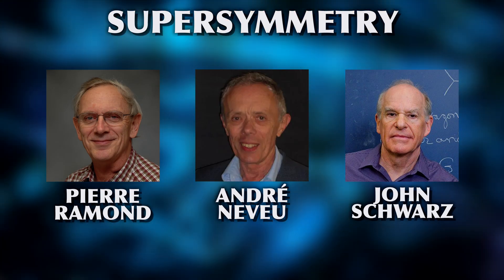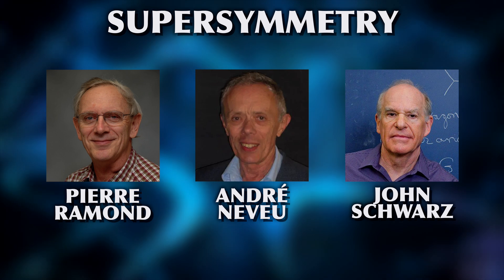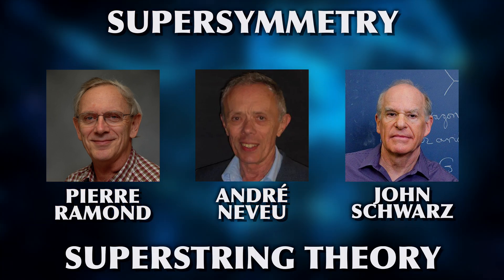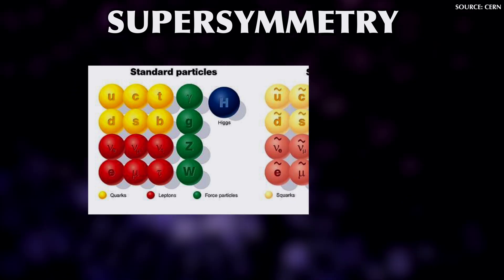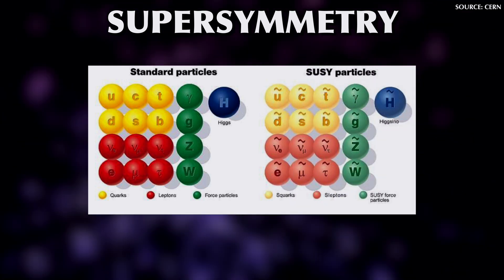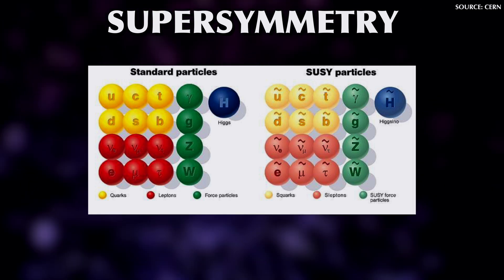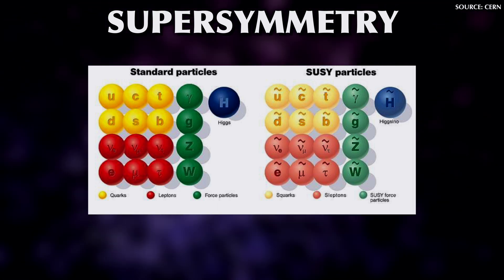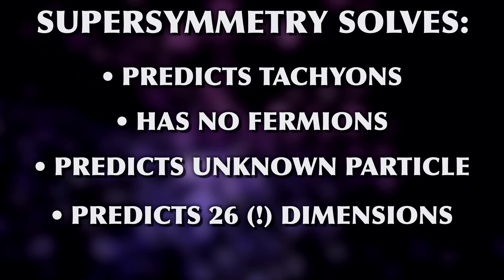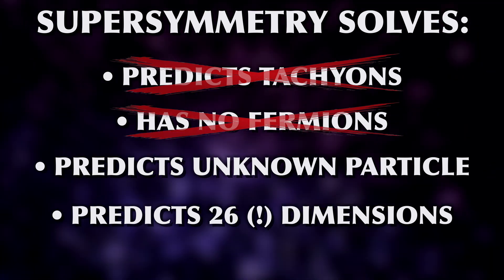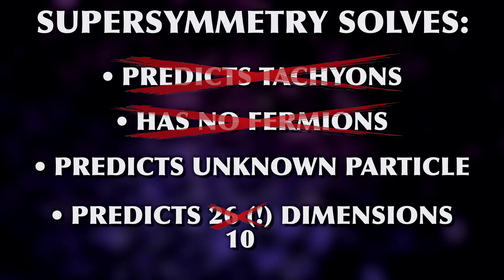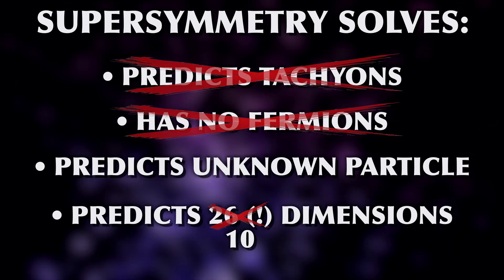There was a big change in 1971 when Ramon, Neveu and Schwartz introduced supersymmetry into string theory, turning it into superstring theory. Supersymmetry is a mathematical concept that posits a symmetry between bosons and fermions — there exists a fermionic twin particle for each boson and vice versa. Note that this is a purely theoretical prediction; we haven't found any such supersymmetric partner particles anywhere yet, to this day. But physicists love symmetry, and the consequences were looking really good: this removed the tachyons and all related instabilities, introduced fermions into the theory, and reduced the critical dimension from 26 down to 10.